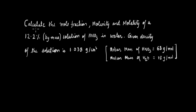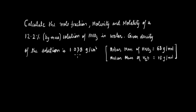Let's go through this problem, which is asking us to calculate the mole fraction, the molarity, and the molality of a 12.2% by mass solution of HNO3 in water. We are given the density of the solution, which is equal to 1.038 grams per centimeter cube.